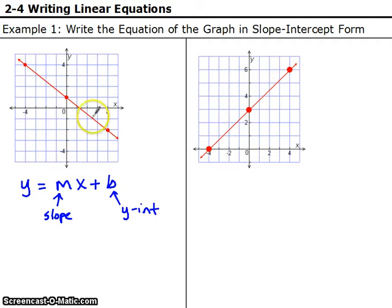Let's start with the y-intercept, that's the easiest, it's just where the graph crosses the y-axis, that's right here, so our y-intercept is (0, 1). So just the y part of the y-intercept is going to go in for b.